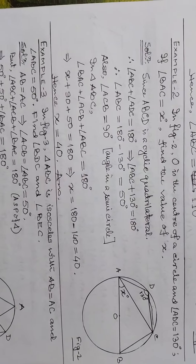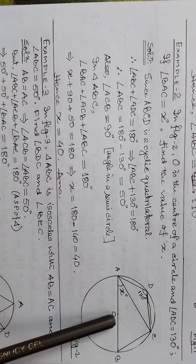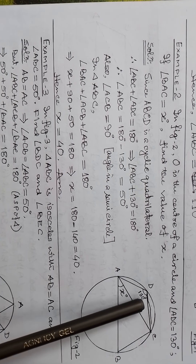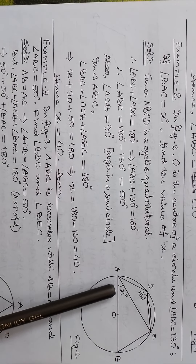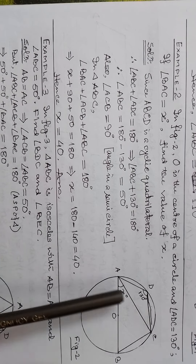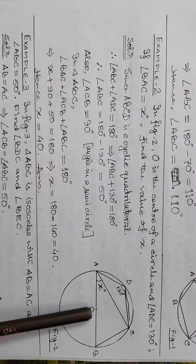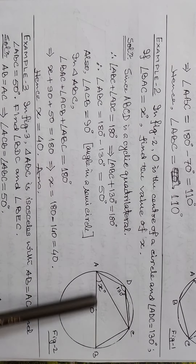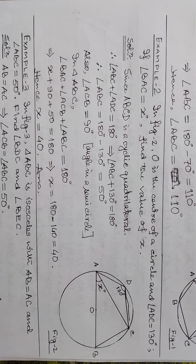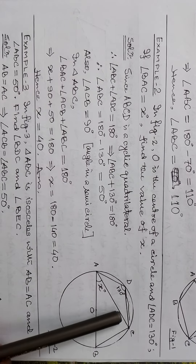Next, question number 2. In figure 2, O is the center of the circle, angle ADC equals 130 degrees, and angle BAC equals x degrees. Find the value of x. We draw a line through the center, giving us a diameter, and the angle in a semicircle ACB is 90 degrees.